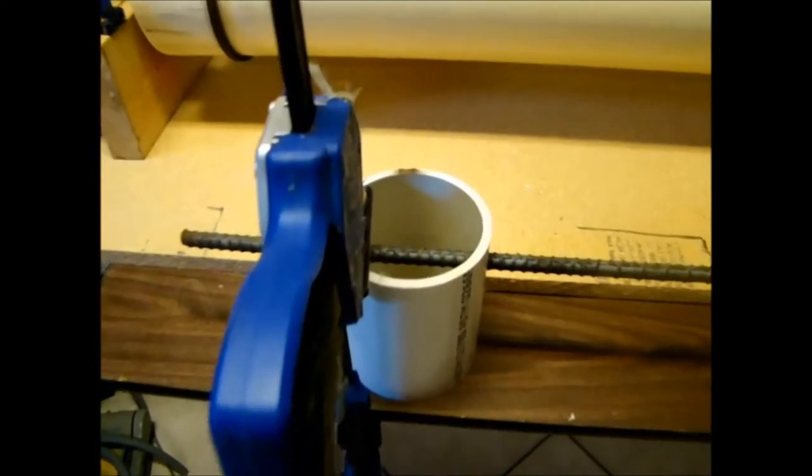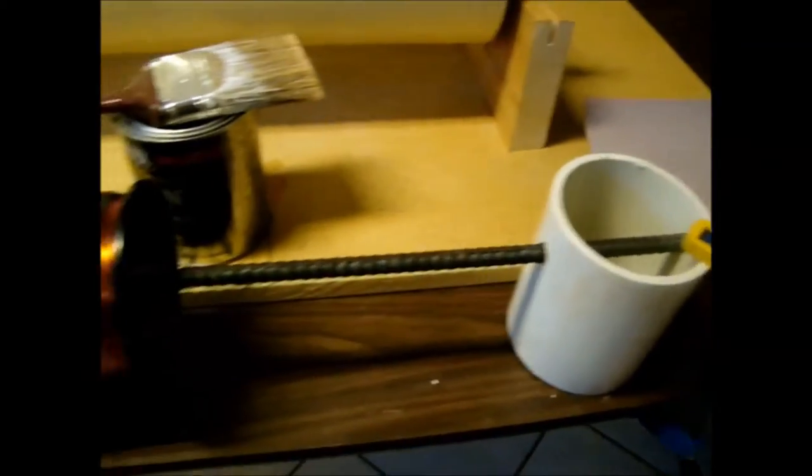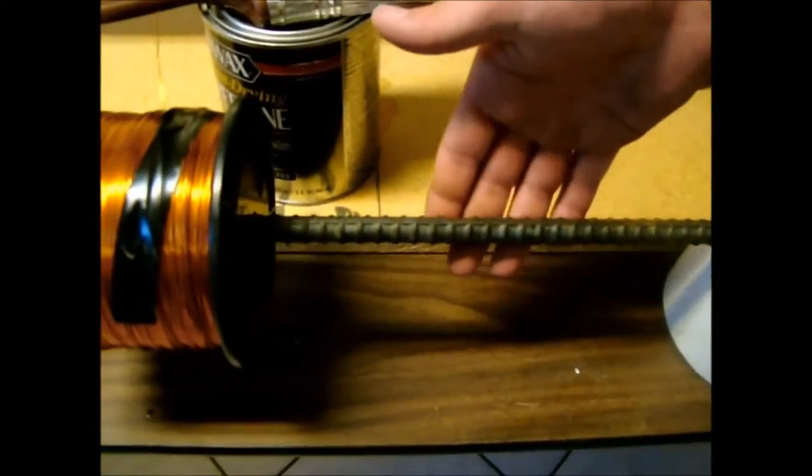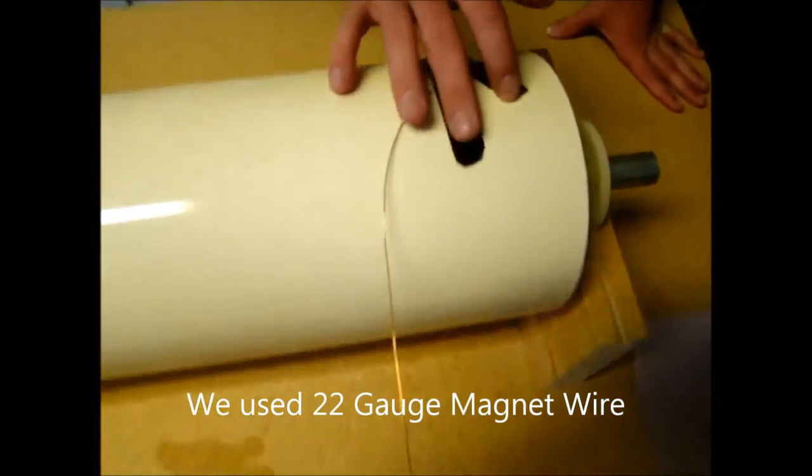Use two 4-inch pieces of PVC for a wire holder and one piece of half-inch rebar. After the winding process, tape your wire to the PVC pipe.